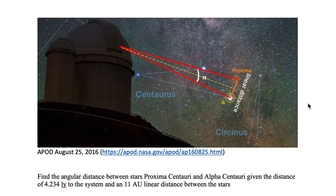Let's say that we want to find the angular distance between stars Proxima Centauri and Alpha Centauri, given the distance of 4.234 light years to the system and 11 AU linear separation distance between the stars.